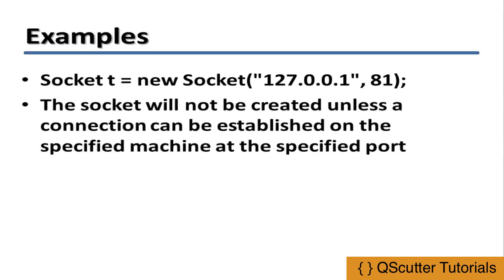The socket will not be created unless a connection can be established on the specified machine and the specified port. That means without a connection on the port, you cannot create a socket. The connection must be established with the port on both computers. A port is an integer used to distinguish among connections — it is not a physical device but is used to differentiate connections between different computers.